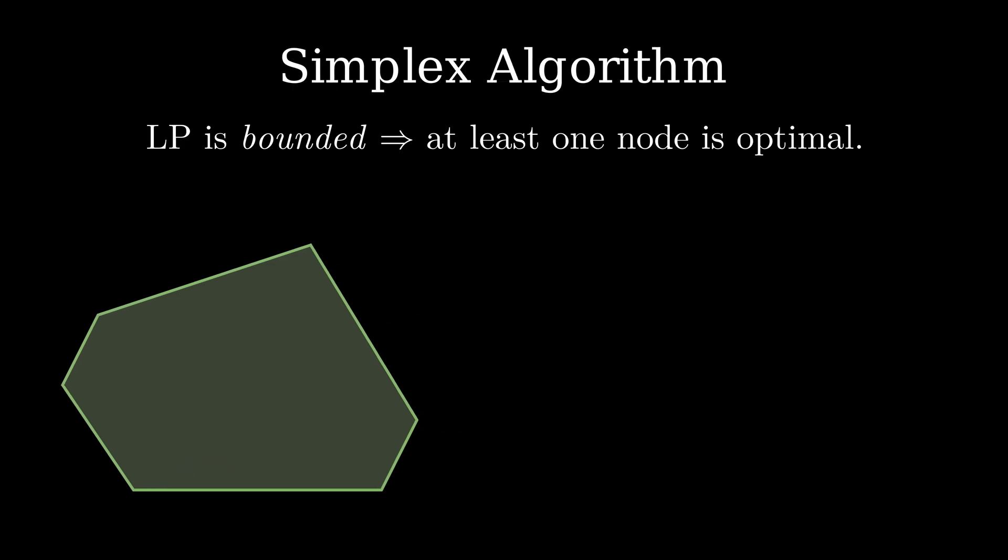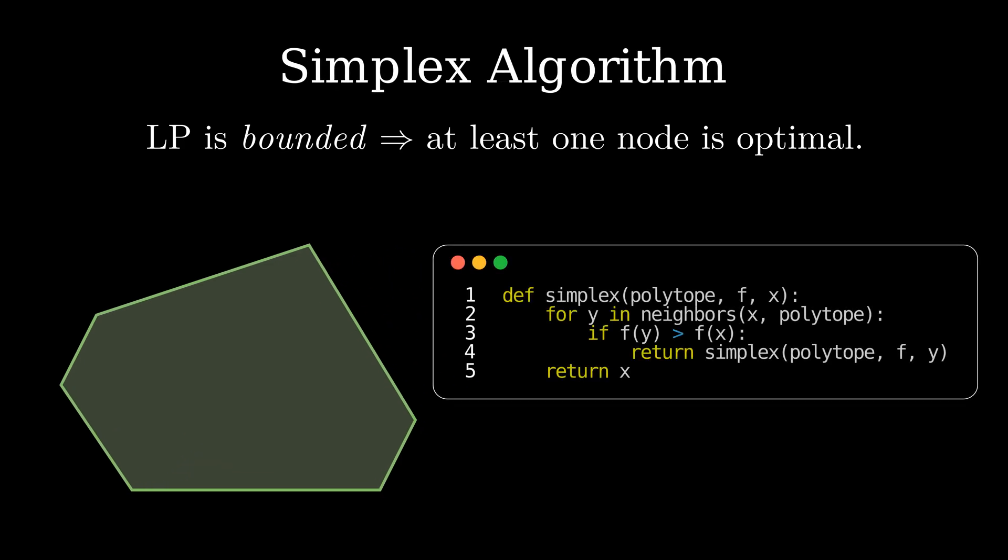This is generally known as the simplex algorithm. We start from a single node of the LP polytope and jump to a neighboring node with a better objective. We repeat this until we can not improve the solution anymore. To jump to a new neighbor, we replace one of the n tight constraints and replace it with another. While this algorithm performs well in practice, there are instances where the time complexity can be exponential in the size of the input. There exist other LP algorithms such as the interior point method which are provably fast, but more complex.